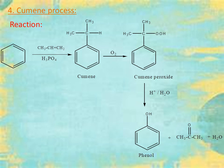These are the four important methods of preparation of phenols: the Dow process, from benzene diazonium chloride, from sodium benzene sulfonate, and the cumene process. Thank you all.